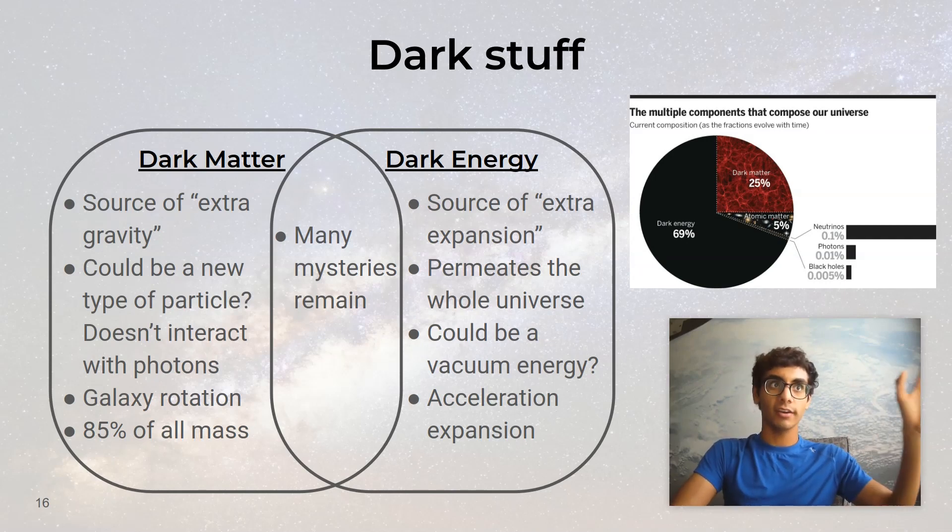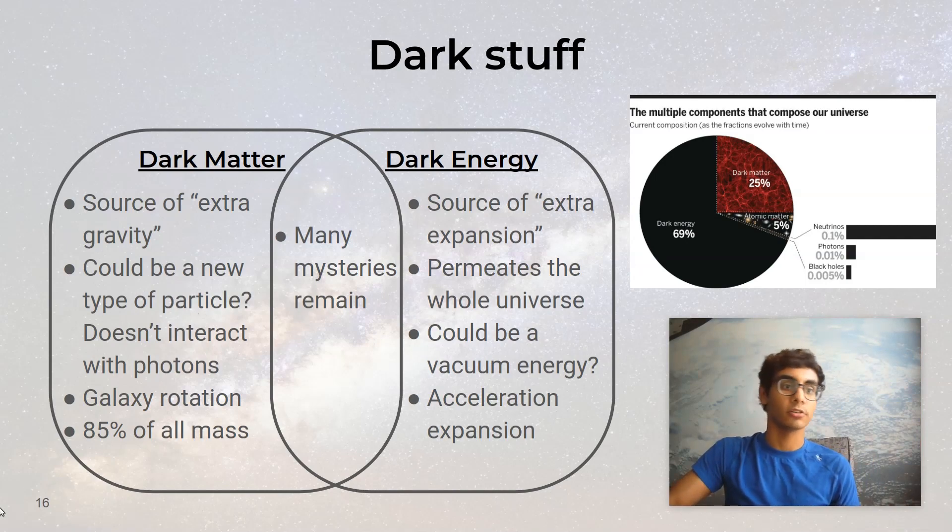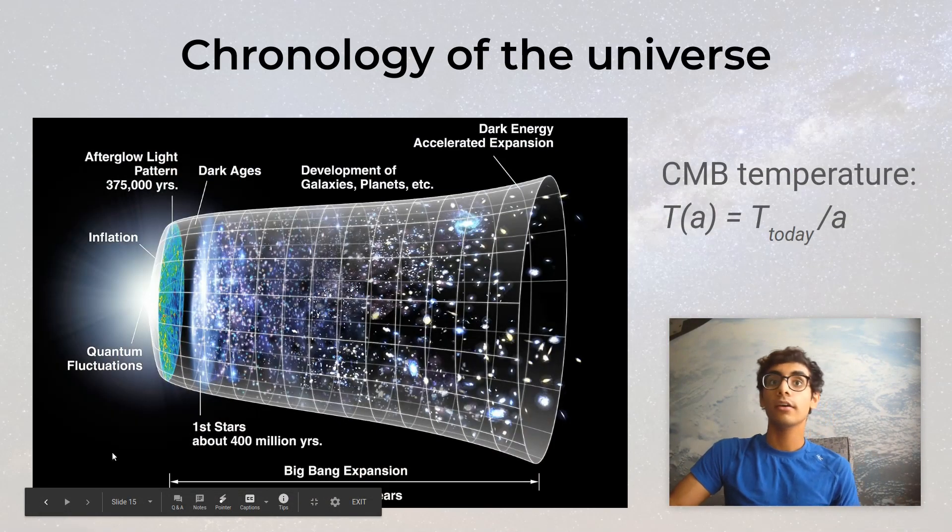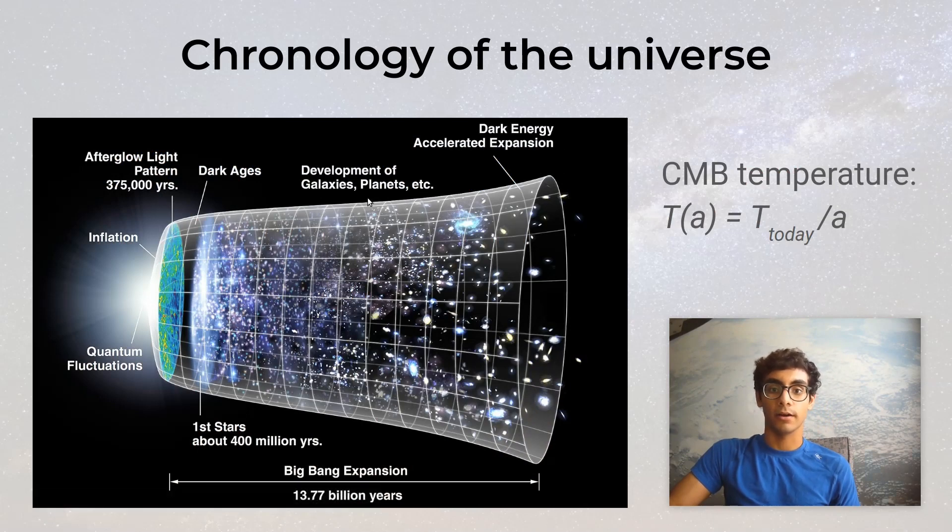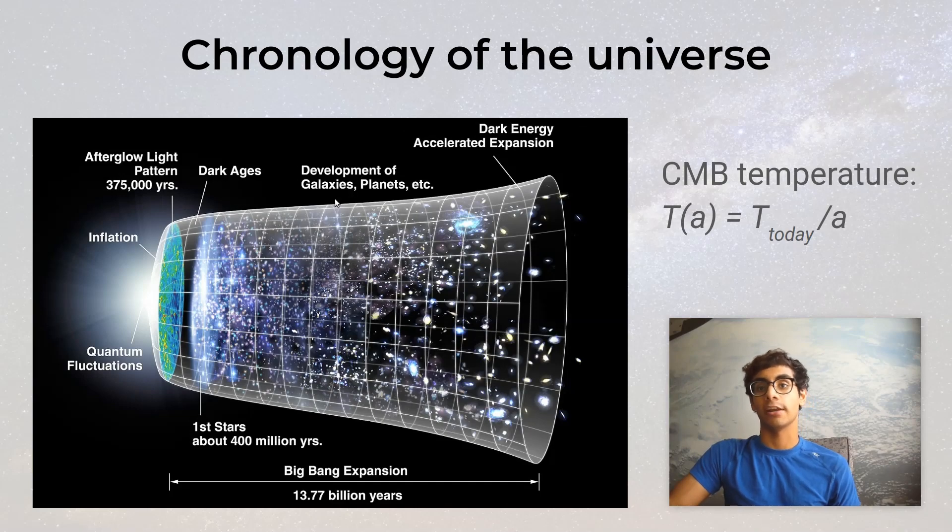In the current era of the universe, dark energy is the most powerful factor out of all the ones I mentioned earlier. That explains why the universe is expanding faster and faster. In other words, why this picture from before has this flaring bell shape in the present day. It's the dark energy accelerated expansion.